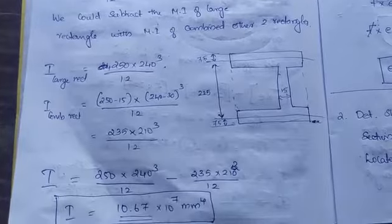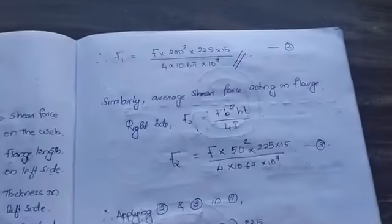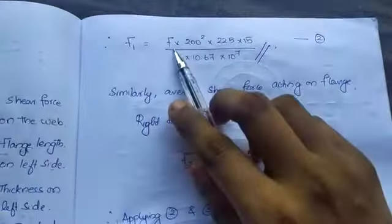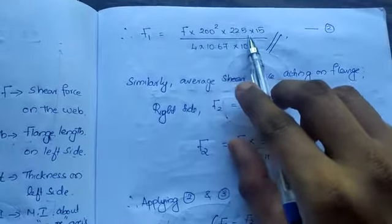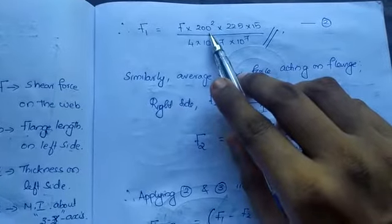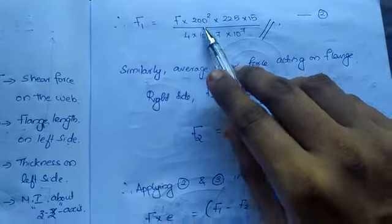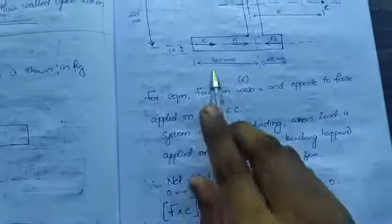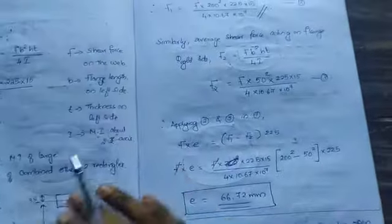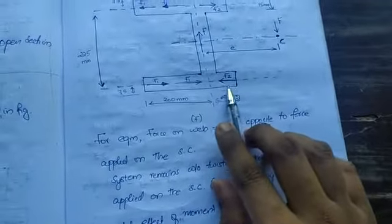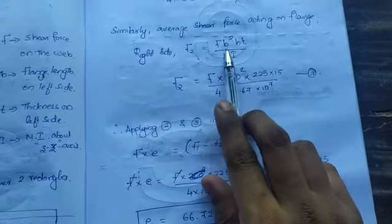Now F1 is F×200²×225×15/I, where 200 is the breadth of this section. And F2 will use 50 because F2 is acting on this section with breadth 50. You substitute F1 you got from here, F2 same thing but only b changes. Applying equations 2 and 3 in equation 1.